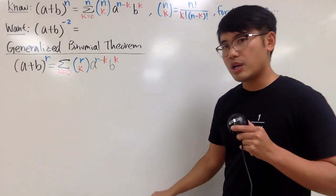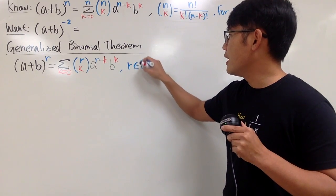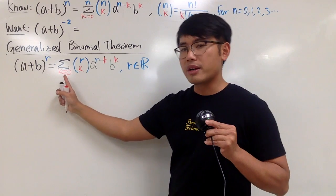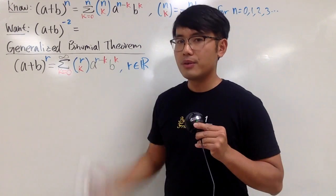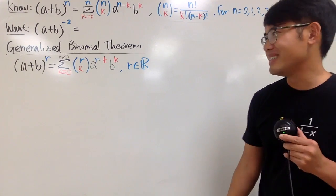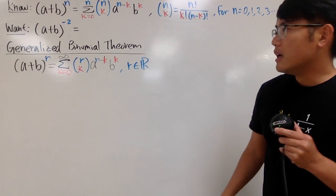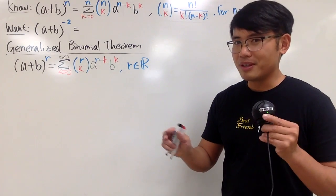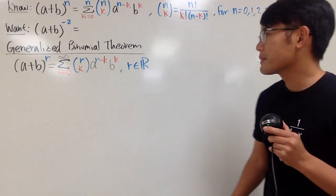If you want r to be any real number, then k goes from 0 to infinity — infinitely many terms. This is the only place that kind of requires calculus if you want to be rigorous about limits. I'm not going to discuss convergence here because I want to keep this as an algebra video, but I'll tell you a little bit.